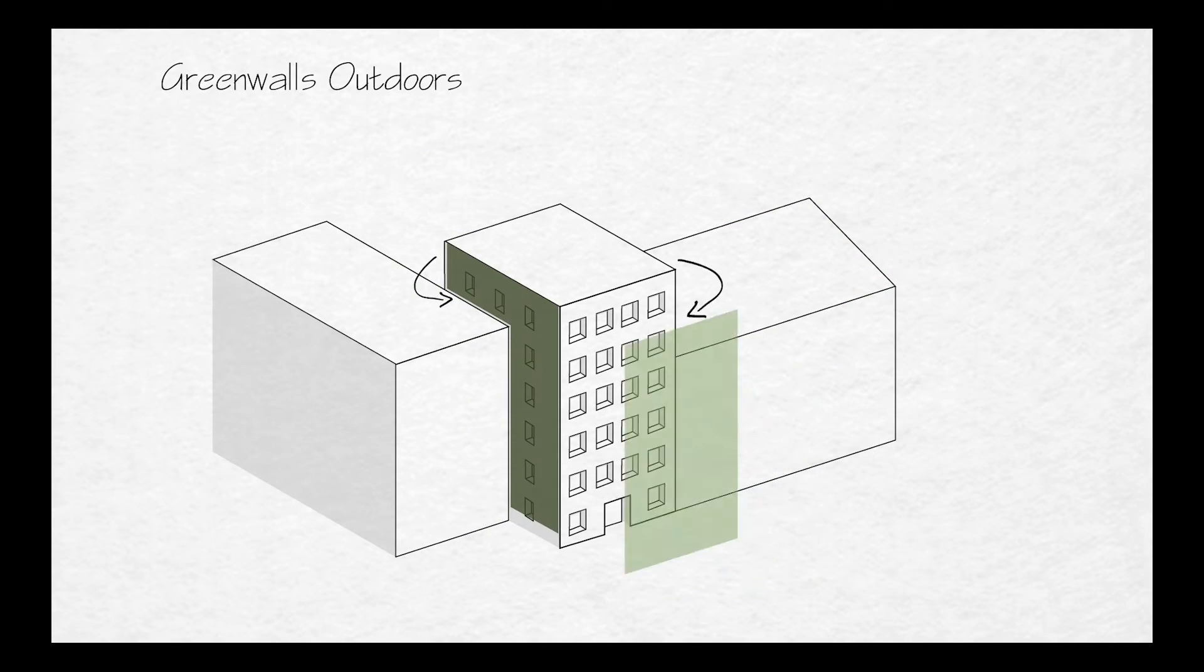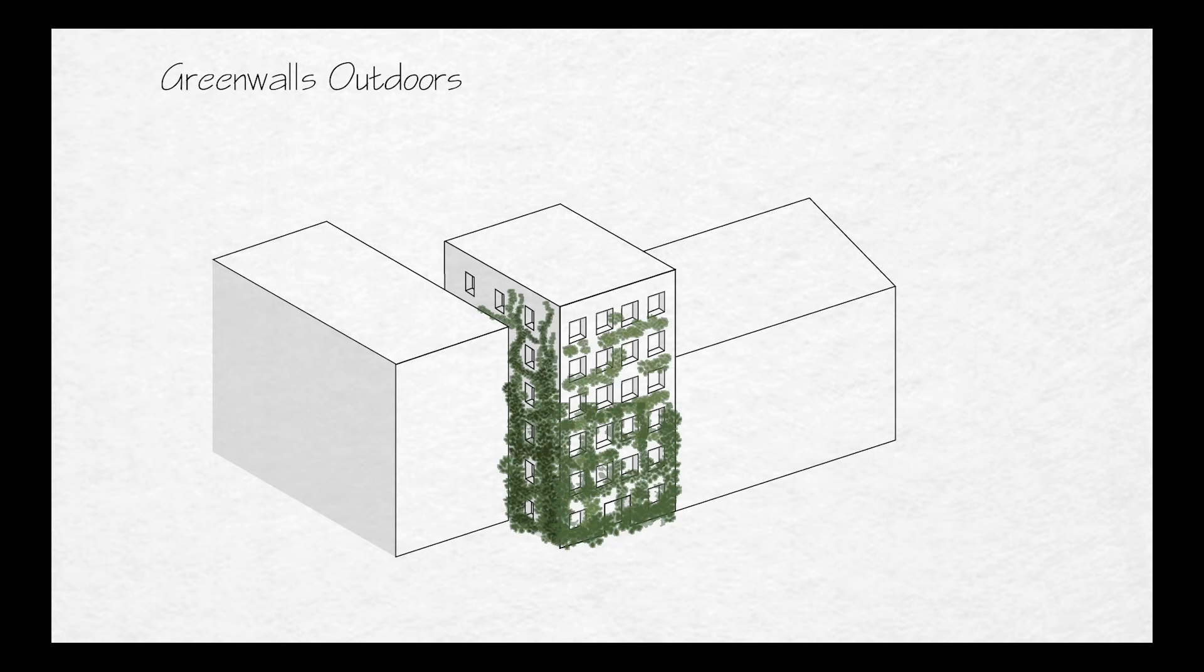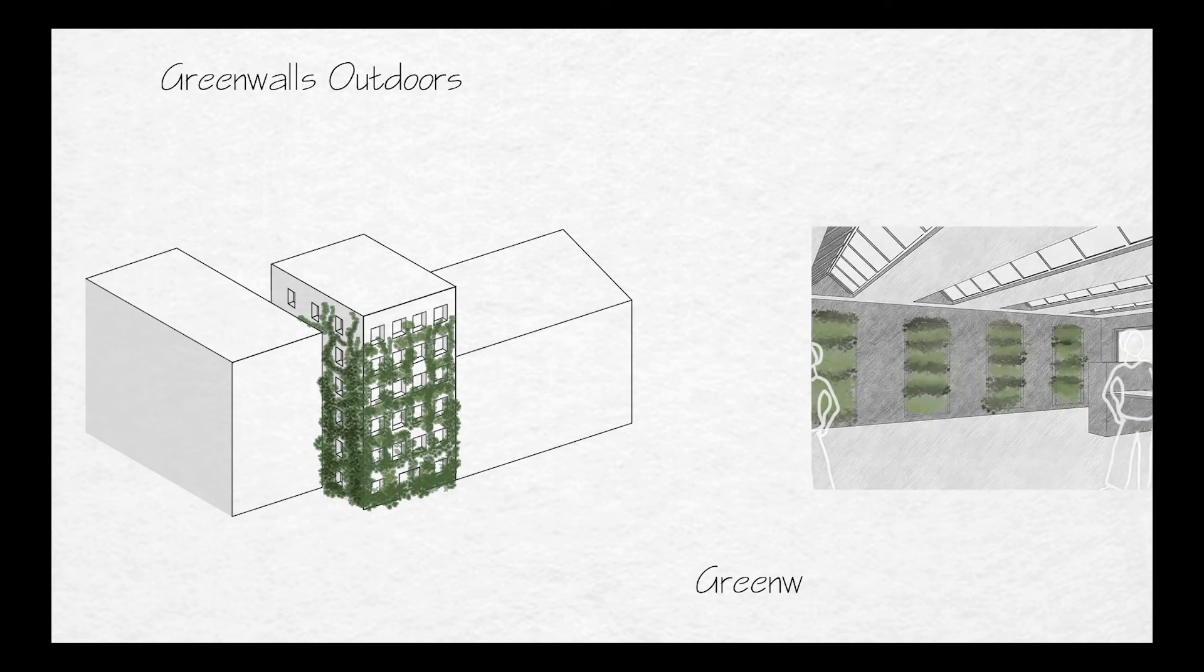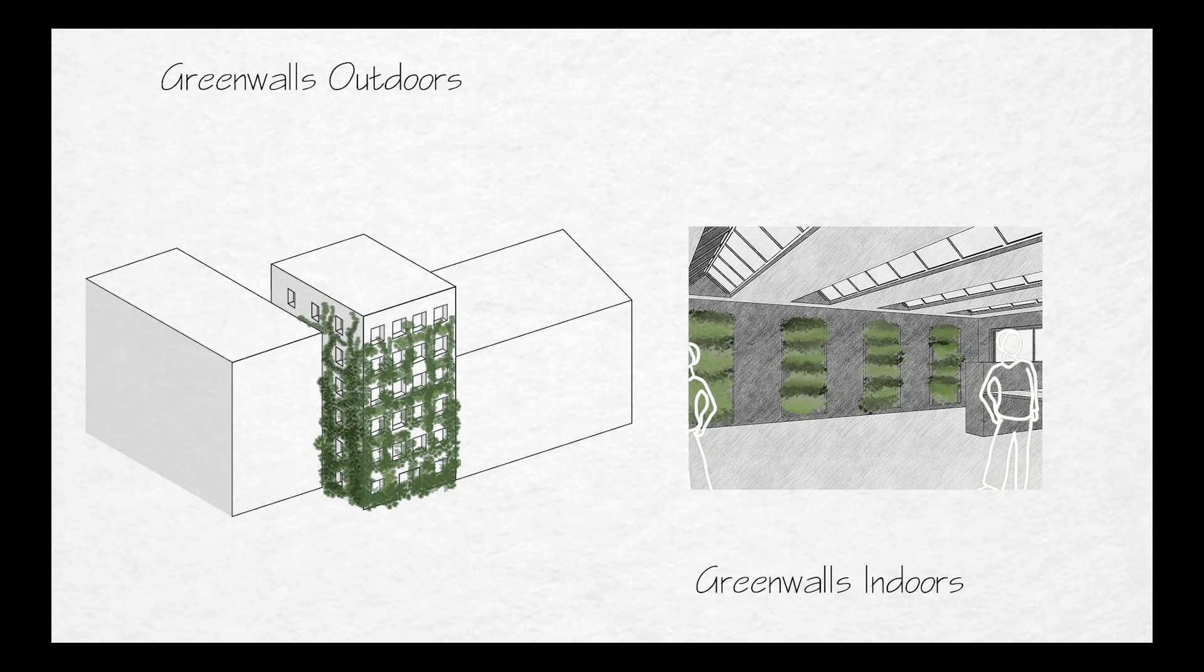The vegetation can grow not only on the roofs, but also on the walls of the building. This can be exterior as well as interior walls.